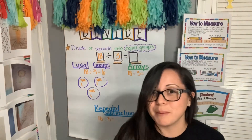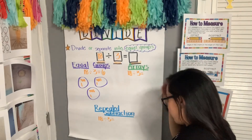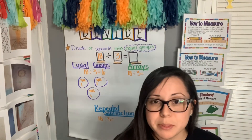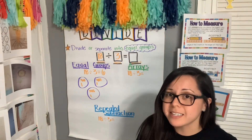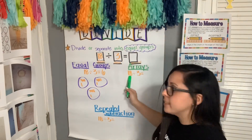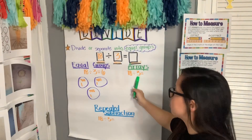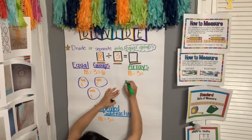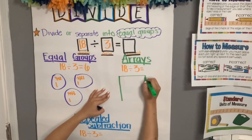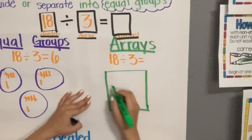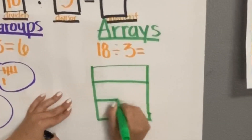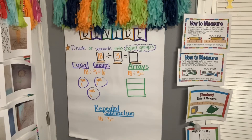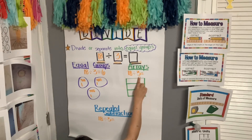The next method we're going to use to solve a division problem is arrays. We already learned about this with multiplication, and now we're going to use an array to divide. The dividend tells me I have a total of 18 to be divided into three equal groups, so I'm going to draw three rows to represent my three equal groups. Those are my three arrays: one, two, three. The divisor tells me into how many groups I will divide the dividend.